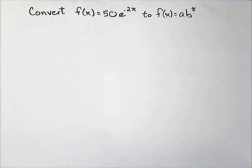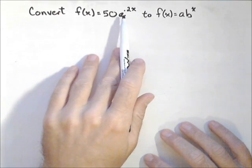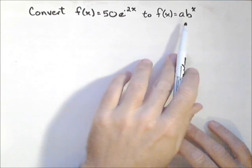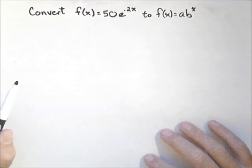In this video, we're going to talk about converting the form of an exponential from the form AE^(kx) to Ab^x, and talk about the different information it gives us.